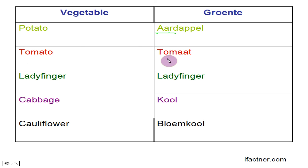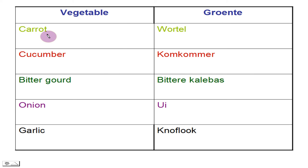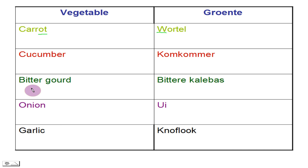Tomato — yes, tomaat. Ladyfinger — yeah, ladyfinger. Cabbage — it's called kool. Cauliflower — yes, bloemkool. Carrot — wortel. Cucumber — yes, komkommer.